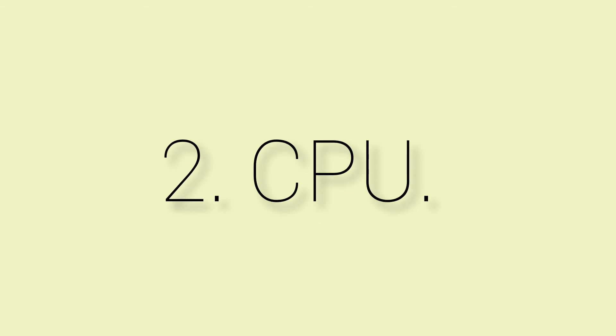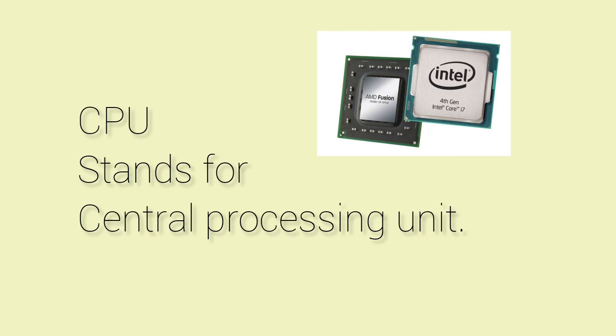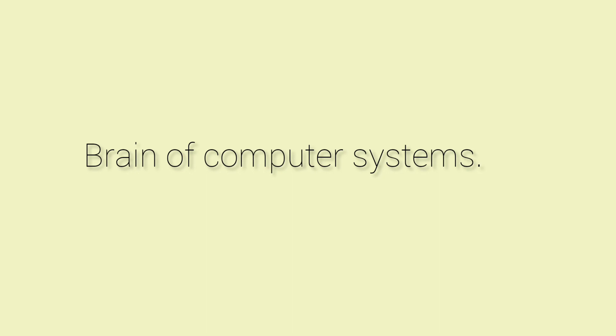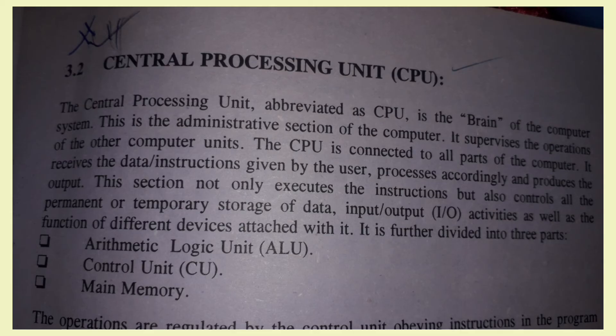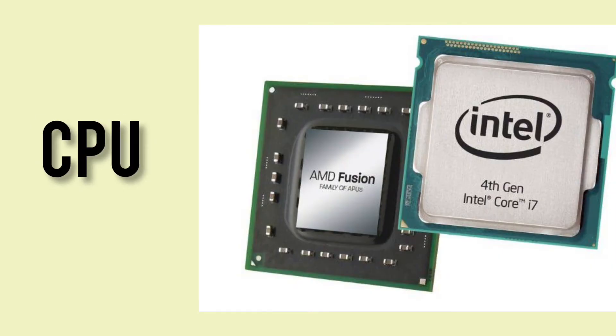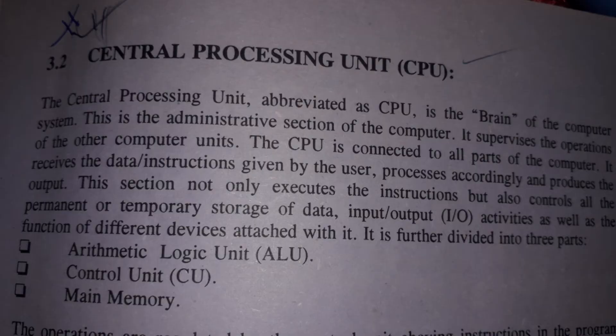The most important unit of a computer system is the central processing unit, CPU. It is also called the brain of the computer because all the functions are done by this unit. It is also called the processor and is the administrative section of the computer. It supervises the operation of other computer units and is connected to all parts of the computer system. Its function is to receive data and instructions from the user and process the data according to the given instructions.